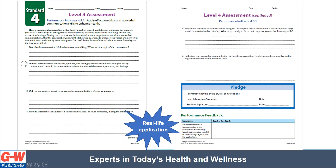These are the questions that the student would respond to after the conversation. For example, number three: did you use passive, assertive, or aggressive communication and defend your answer? And provide at least three examples of I-statements you used or could have used during the conversation. Number six: reflect on your nonverbal communication during the conversation and provide examples of both positive and negative forms of nonverbal communication that you used. The teacher has a place at the bottom to provide feedback.